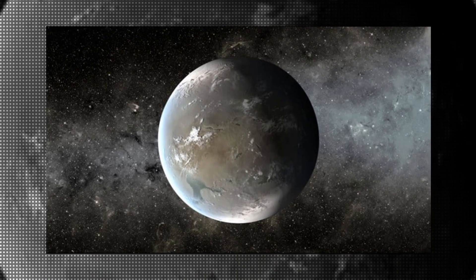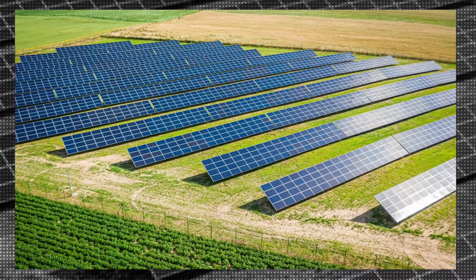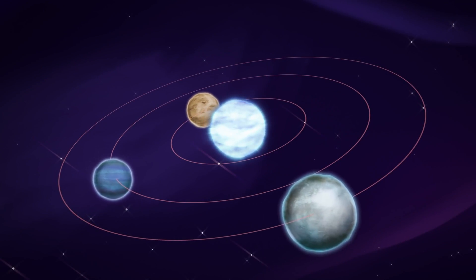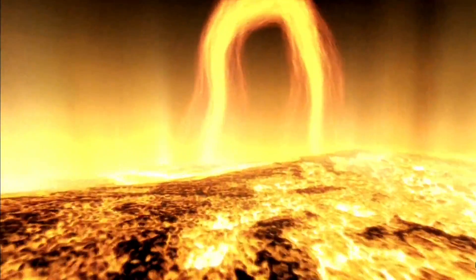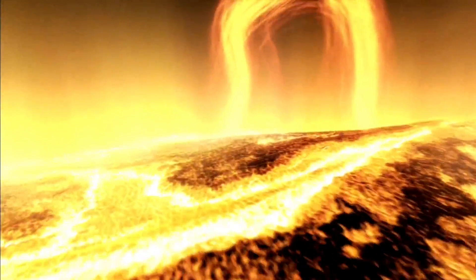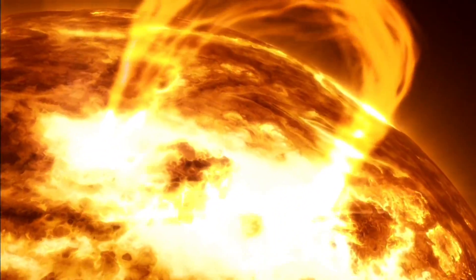A tidally locked planet has advantages because solar energy farms would always produce electricity. The energy could then be distributed to other parts of the exoplanet that require it. Colonists could choose any average temperature they wanted and hide from solar flares by keeping dangerous Proxima Centauri just over the horizon and out of harm's way.